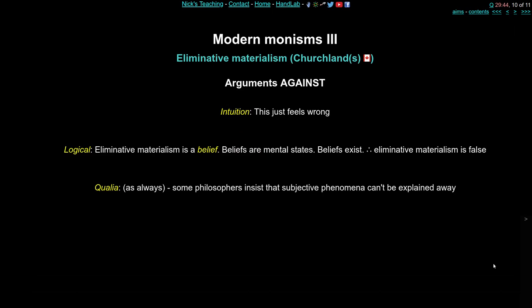To argue against eliminative materialism is relatively straightforward. Intuitively, you can just say this feels wrong — it really does feel like there's a mind-brain problem. More logically, eliminative materialism is a belief in Patricia Churchland's mind — that's a mental state. So if she believes eliminative materialism is true, that means beliefs exist, and therefore eliminative materialism must be false. Though Churchland would probably respond that she's just a fallible human and doesn't need folk psychological explanations to be true. And of course, qualia can always be brought in — some philosophers insist that subjective qualitative phenomena just can't be explained away by saying the problem will go away.